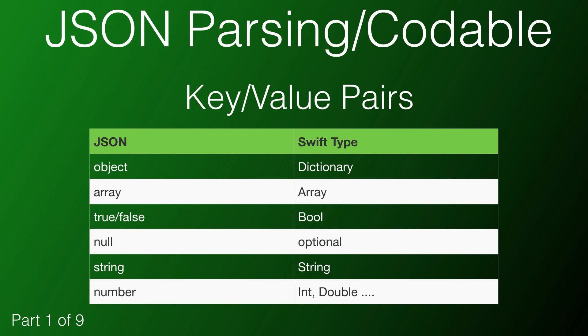What's fortunate for us is that each one of these JSON types can map to a corresponding Swift entity. You'll notice that there's no corresponding representation for something like a date. The good news is that we can almost always convert things like dates into corresponding numeric or string representations, and we'll get into that in the series.